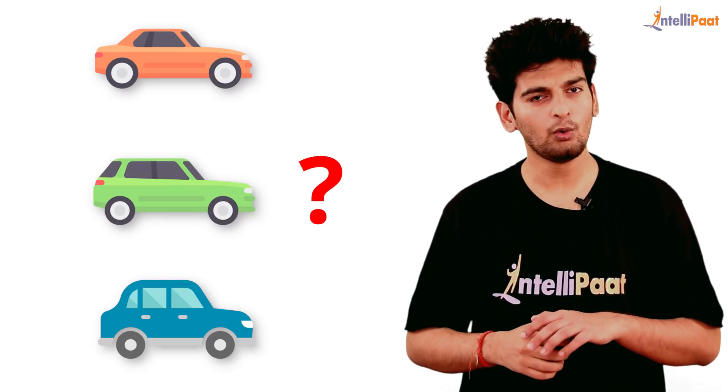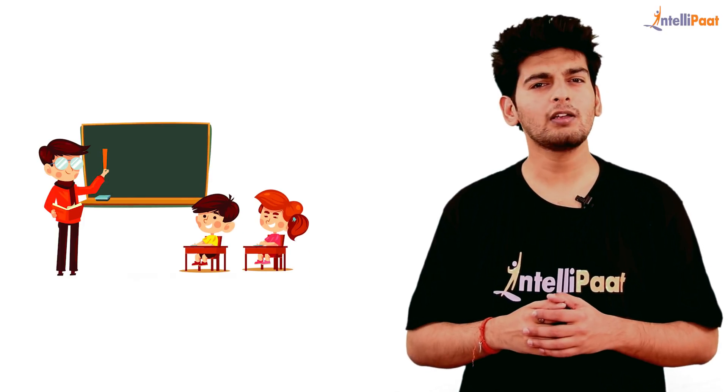Now how do you know all of these are cars? Well as a kid you might have come across a picture of a car and you would have been told by your kindergarten teacher or your parents that this is a car, and your brain learned that anything which looks like that is a car. And that is how our brain functions.